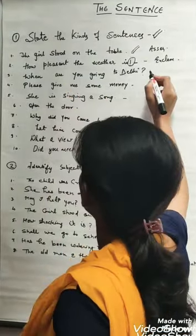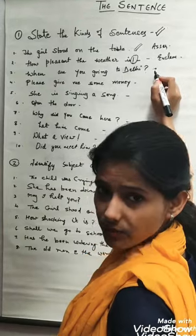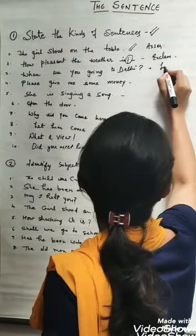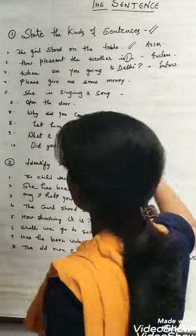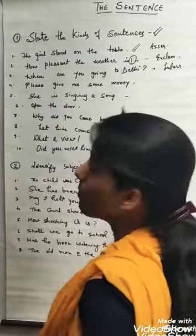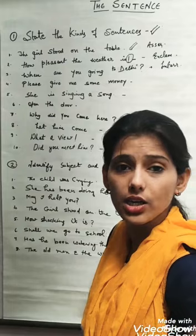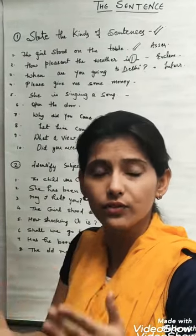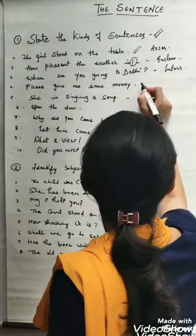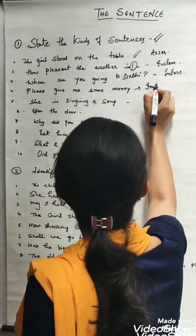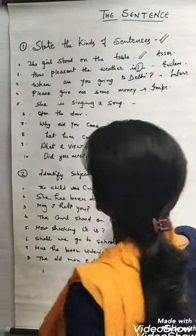When are you going to Delhi? Again, we are asking something. So this is an interrogative sentence. Next, please give me some money. So here we are making a request that please give me the money. And when we make any request, then it's an imperative sentence.